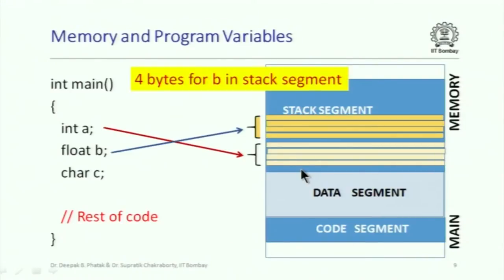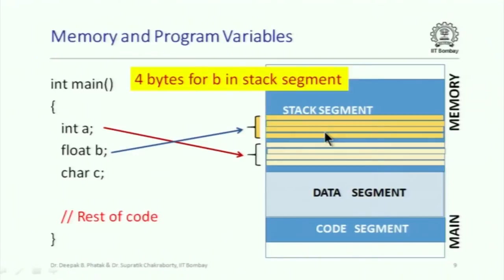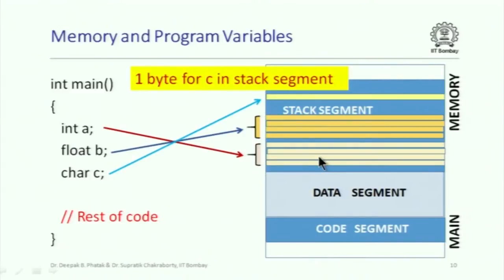Similarly, for B (float), float again requires 32 bits. The representation of a number in float is very different from integer: float uses mantissa-exponent representation, while integer uses 2's complement. For C, which is a character, we need just one byte. What we taught several classes back about how many bits are needed for each data type is important when you try to understand what is happening in memory as you run this program.